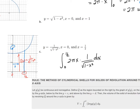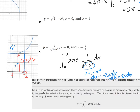We use u-substitution: let u = 1 - x², so du = -2x dx, meaning -du = 2x dx. Changing the limits: when x = 0, u = 1; when x = 1/2, u = 3/4. So the new limits of integration go from 1 to 3/4.